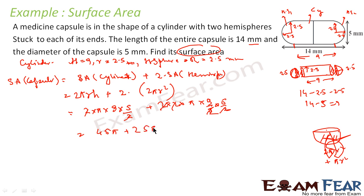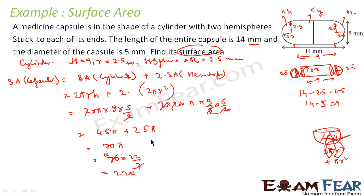We get 75π. Putting in the value of pi as 22/7: 75 × 22/7. The 7 cancels to give us 10, so 22 × 10 = 220. Since we are talking about millimeters and surface area, the answer is 220 mm².